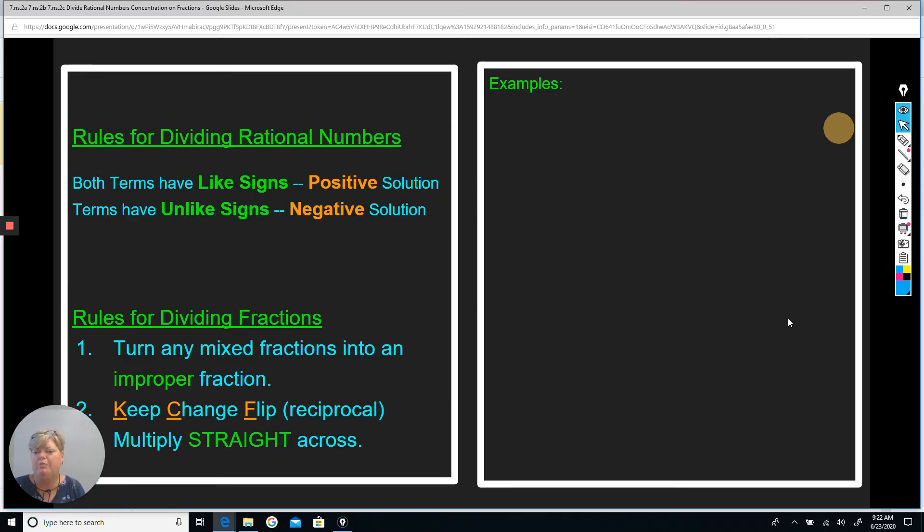Go ahead and look at the rules that we're going to talk about, rules for dividing rational numbers. If you have two terms that have like signs, both signs are positive, both signs are negative, the solution will be positive.